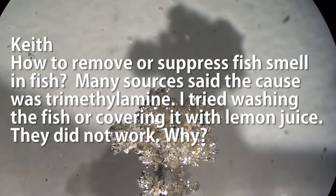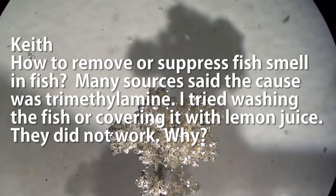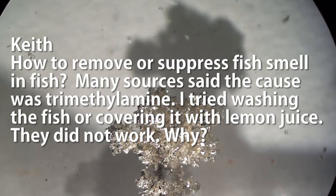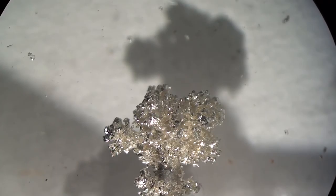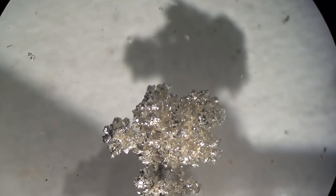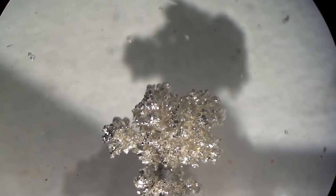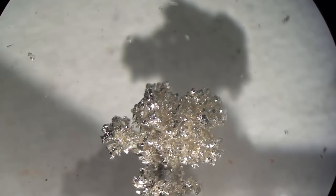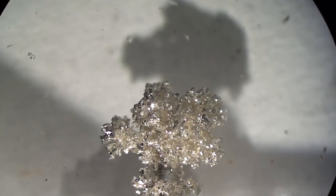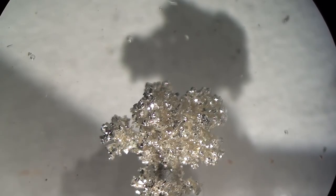Okay, Keith asks, how to remove or suppress fish smell in fish? Many sources said the cause was trimethylamine. I tried washing the fish or covering it with lemon juice, that did not work. Why? Can't really help you. I know lots of chemicals that can do it, but they're all totally unsafe for human consumption. The chemicals responsible for fish odors are usually amine-based, so indeed things like vinegar, lemon juice, citric acid or similar should work. If it's not working, you'll likely need more or your fish might be in the advanced stages of decay.